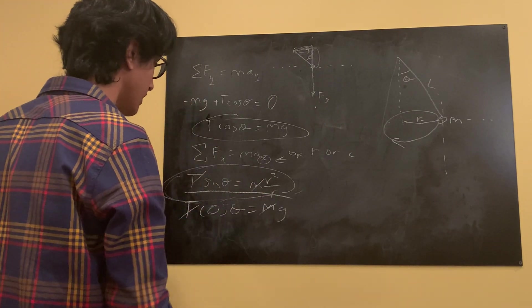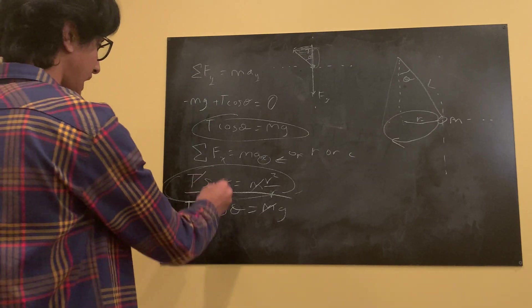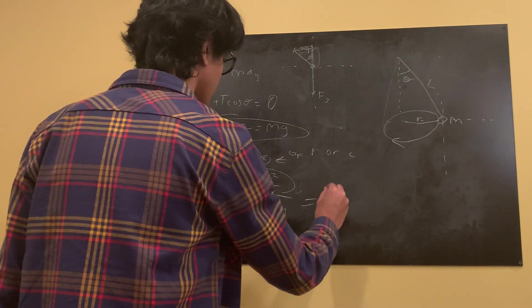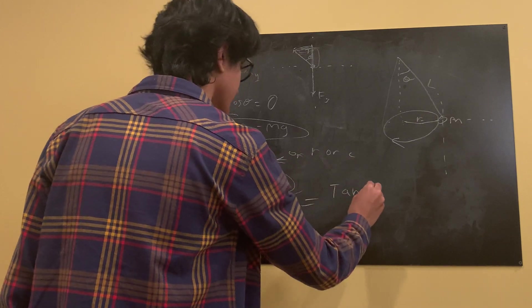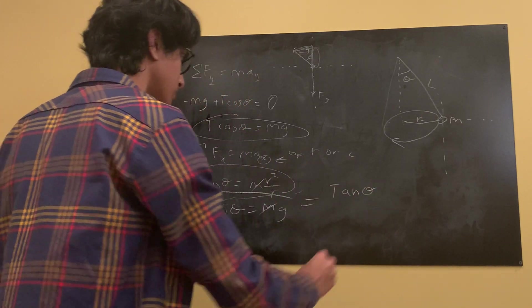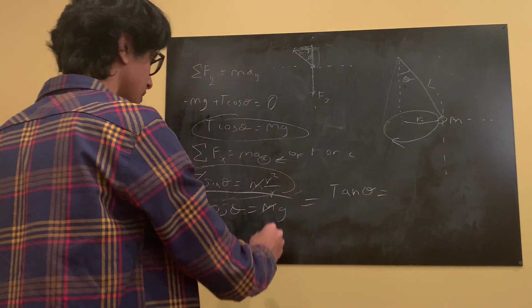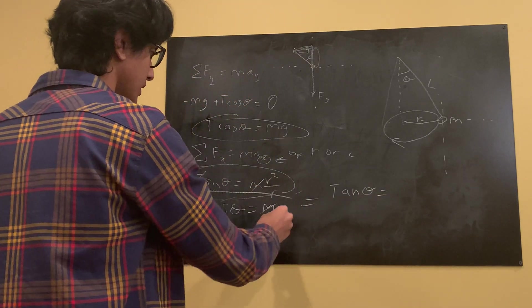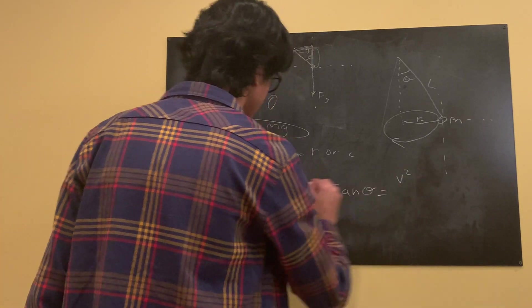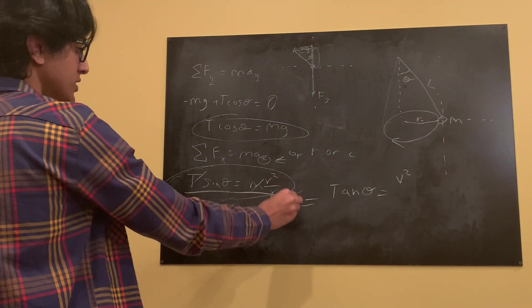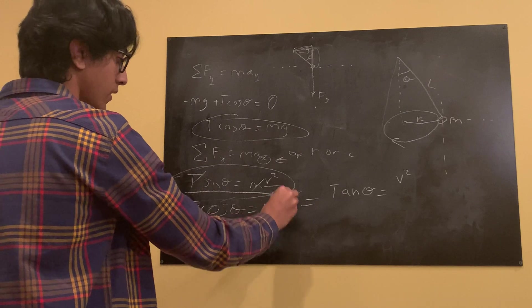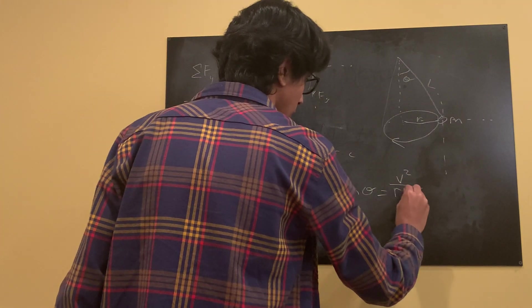V squared is in the numerator. R. V squared over r divided by g. G goes into the denominator right there. Rg.